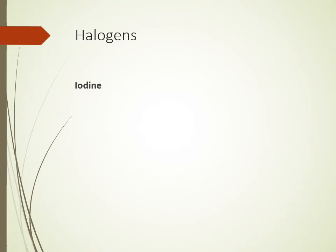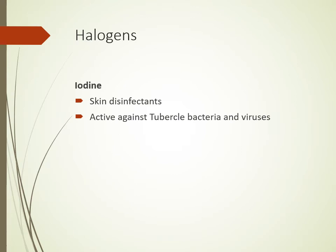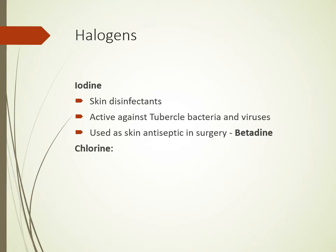The halogen group has two medically important disinfectants: iodine and chlorine. Iodine is widely used as a skin disinfectant; it is active against tubercle bacteria and viruses. Betadine is the widely used iodine product, used as a skin antiseptic before surgery.